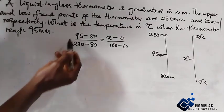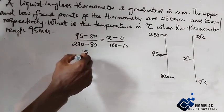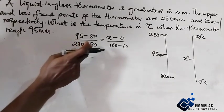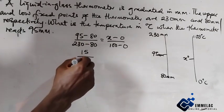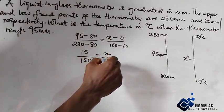So, 95 minus 80 gives us 15. And 230 minus 80 gives us 150. So we have 15 over 150 equals x over 100.